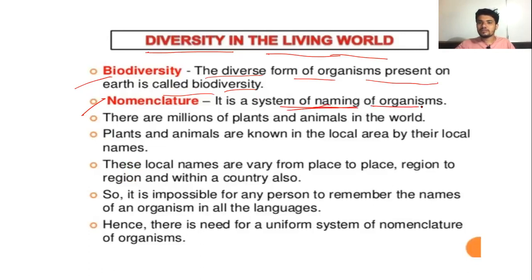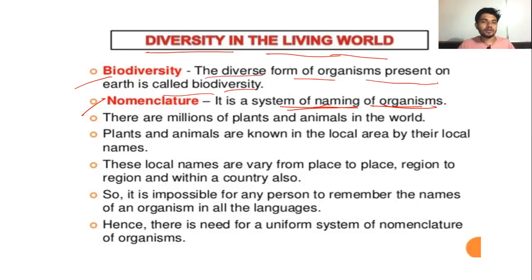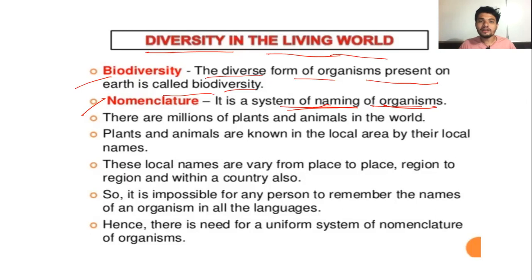Every organism has its particular kind of name. There are two types of names which we have studied: one is vernacular name and second is scientific name. What is a vernacular or common name? Vernacular name is used in a local area, and scientific names are universal, which are used all over the world.